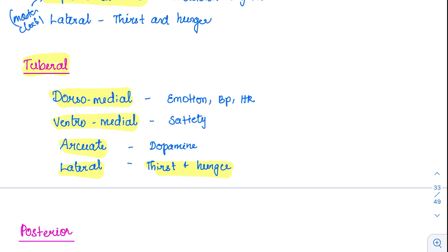Ventromedial is for satiety. Arcuate nucleus is seen in the endocrine system - this is the one producing dopamine, prolactin inhibitory hormone. And dorsomedial is involved in emotion, BP, and heart rate.